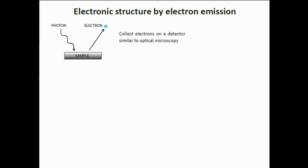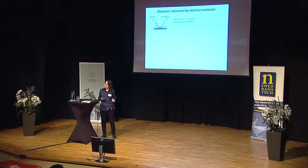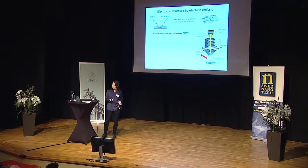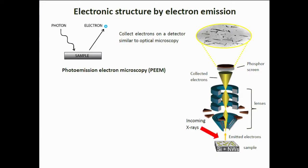The second technique is obtaining electronic structure via a light-in, electron-out process — photoemission electron microscopy. This is a little different from XPS: whereas before we were measuring the kinetic energy of electrons coming out, here we collect the electrons similarly to how you would collect light in an optical microscope. Your electrons are emitted from the sample and nanowires, collected and focused through a variety of lenses, and then they hit a phosphor detector. In this way you get a direct picture of how the nanowires look — many nanowires at one time — giving structural information but more importantly electronic information about the nanowires.